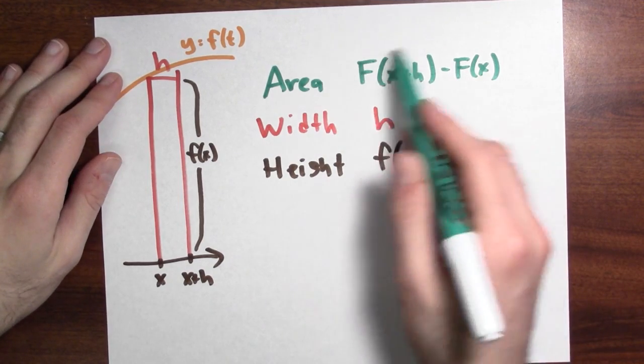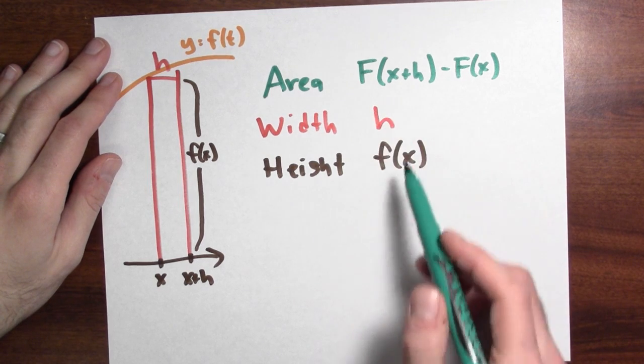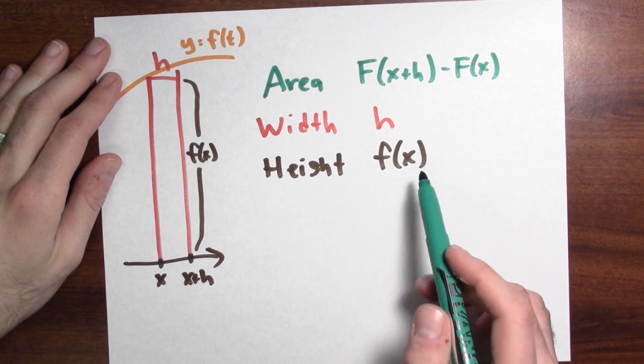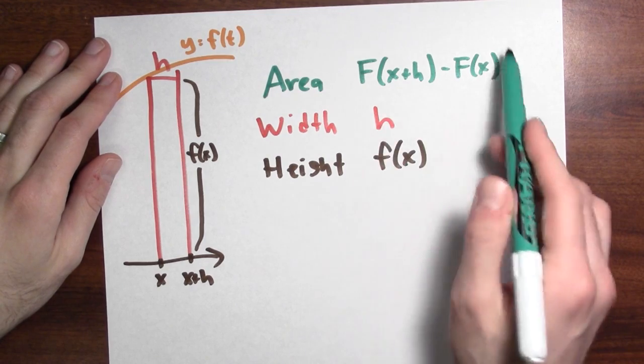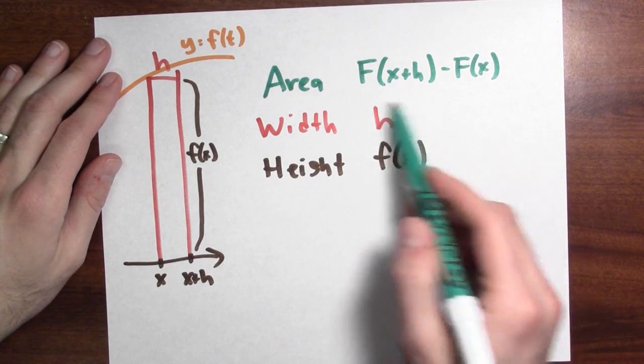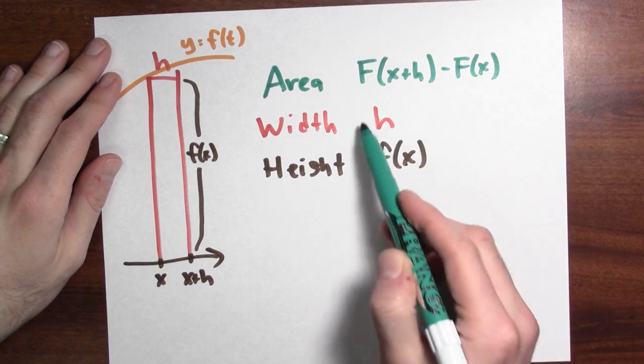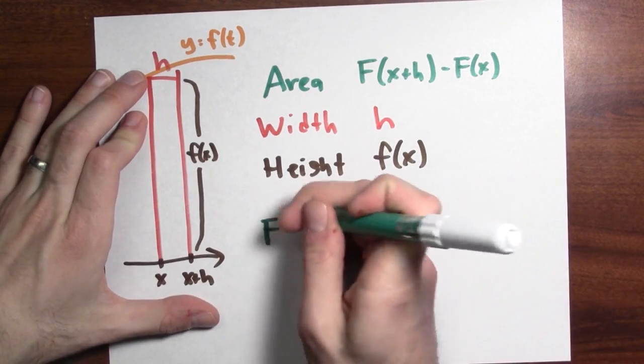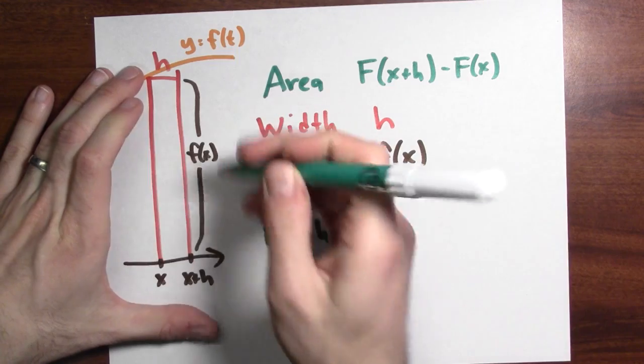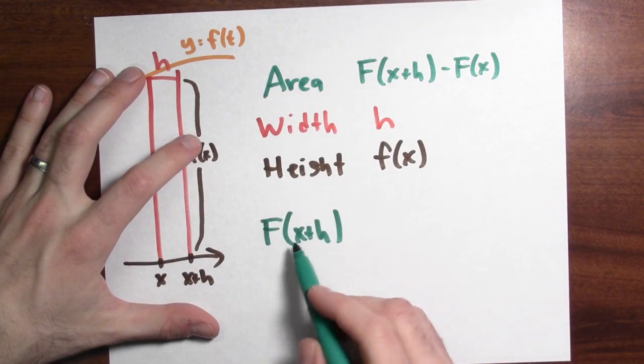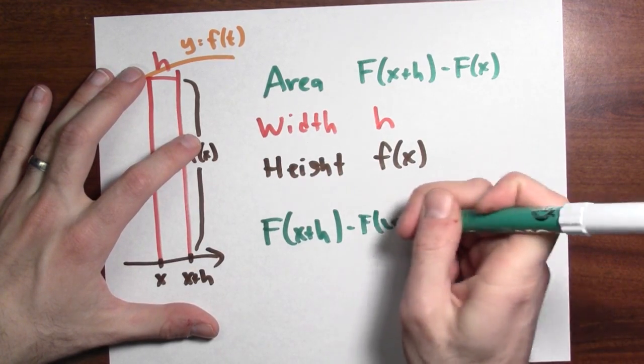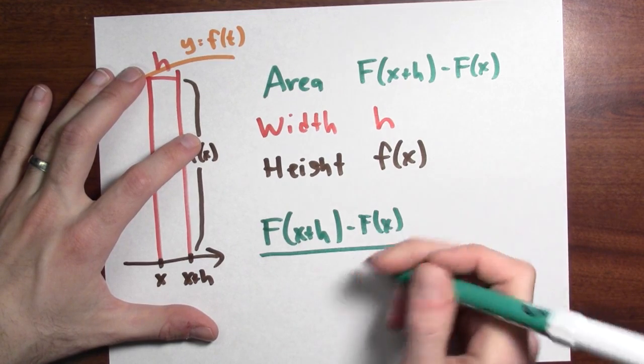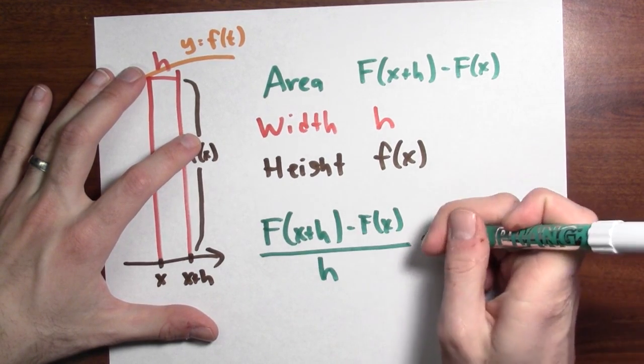I mean, what I've really got here is a rectangle and its area is about F(x + h) minus F(x), this accumulation function. Its width is h and its height is about f(x). Well, if I've got a rectangle with this area and this width and this height, I know its height times its width is its area. So if I take its area and divide by its width, I should get its height. Now, all this is just approximate, but let's write that down. The area of this rectangle is F(x + h) minus F(x). And if I divide by the width, I should get the height.